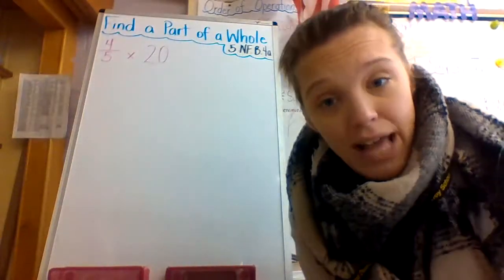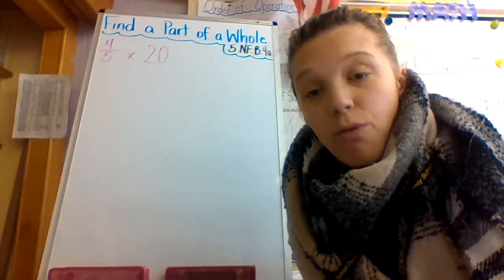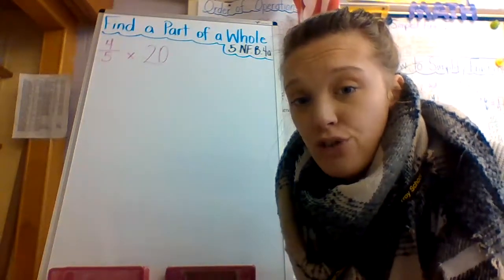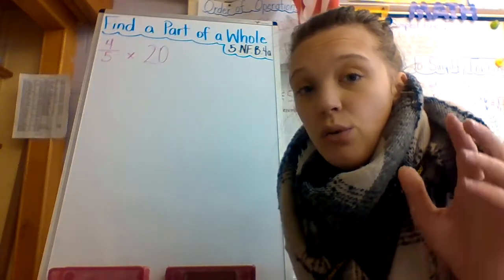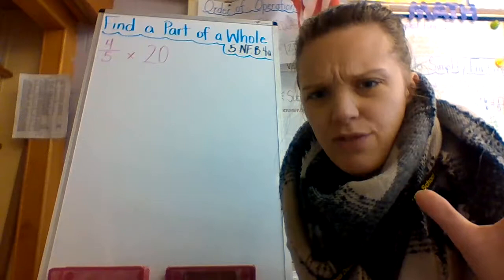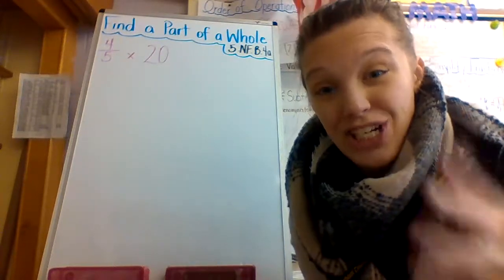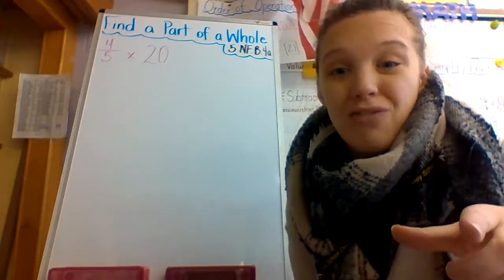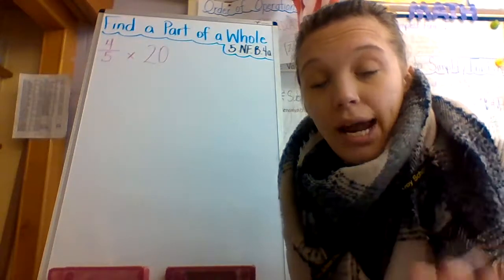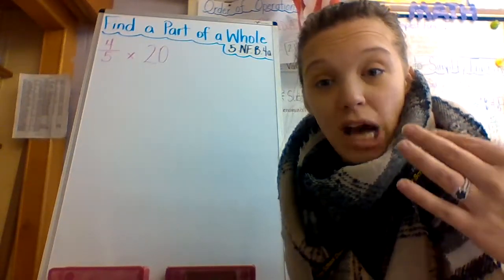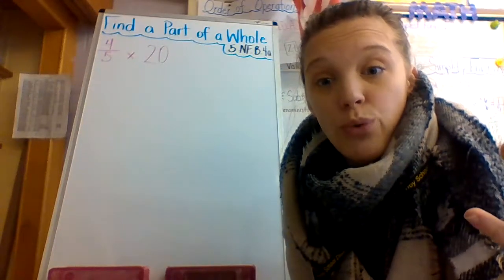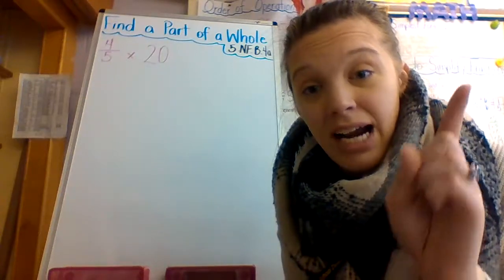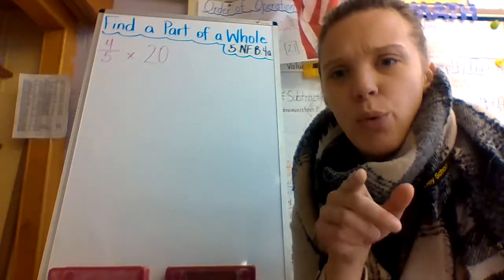So as you can see, I already have an example on the board. It's four fifths times 20. 20 is a whole number, four fifths of course is a fraction. So the first step that we're going to take is we need to choose a strategy. Now I've only taught this for one day, so I only have one strategy to show you. And of course as the days progress on and we get deeper into this chapter, you'll see videos of different strategies. And I always tell my students my job as an educator is to show you the different strategies that you can use to solve. And then your job as a scholar and as a learner is to choose which strategy works best for you.